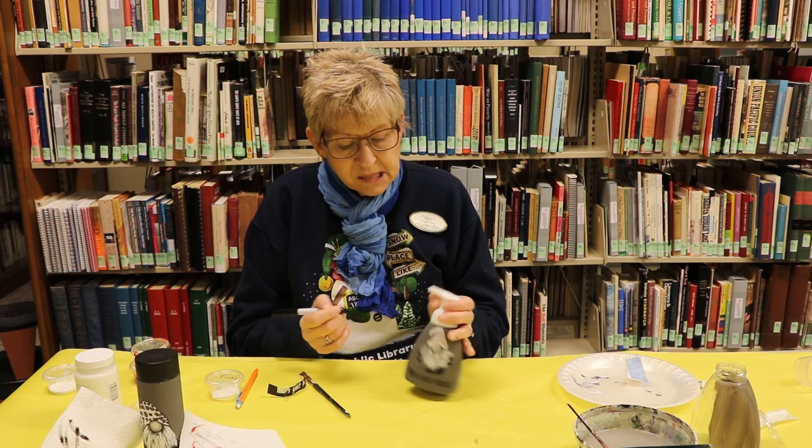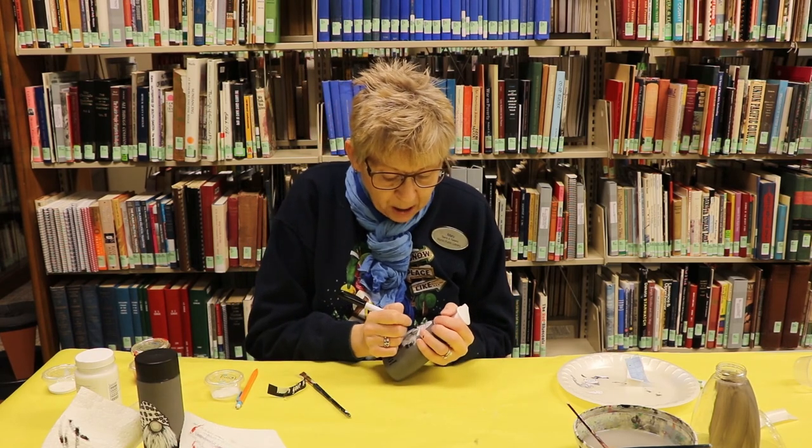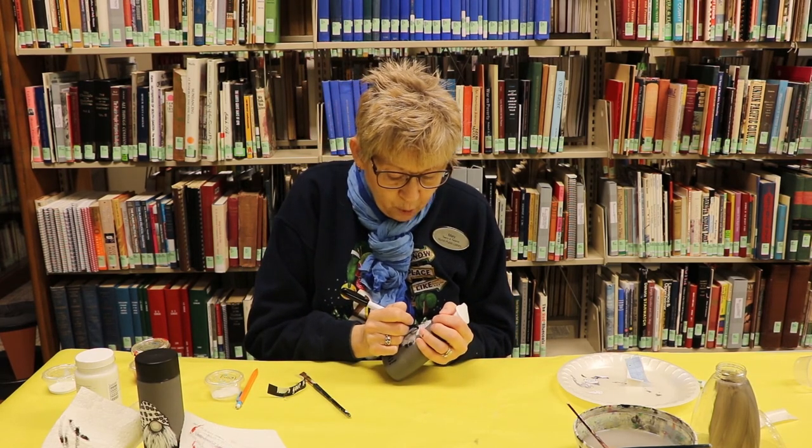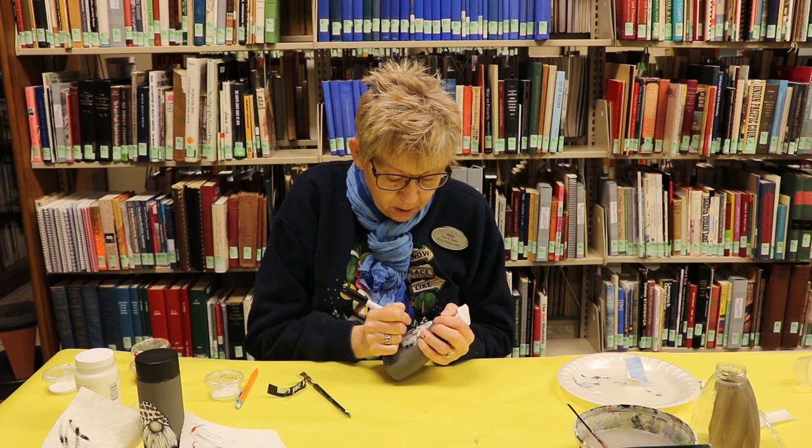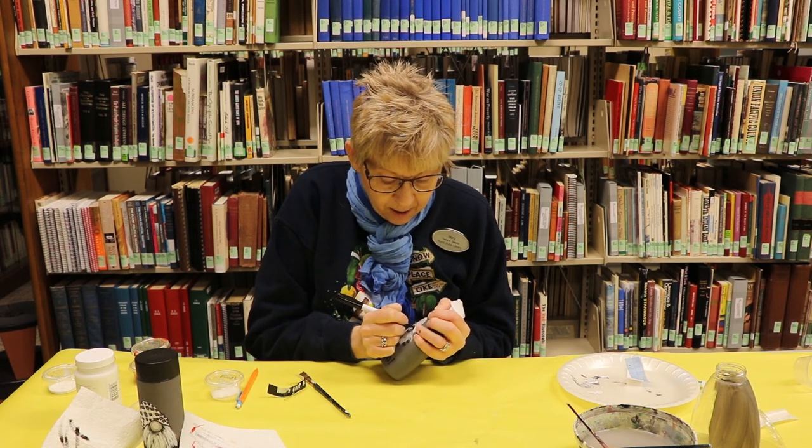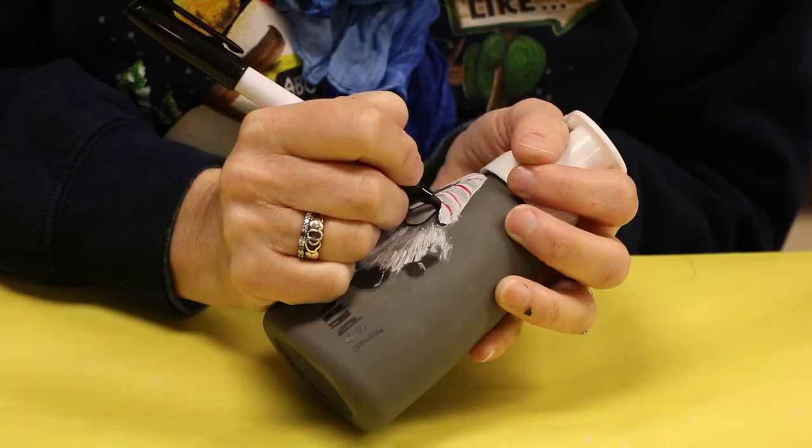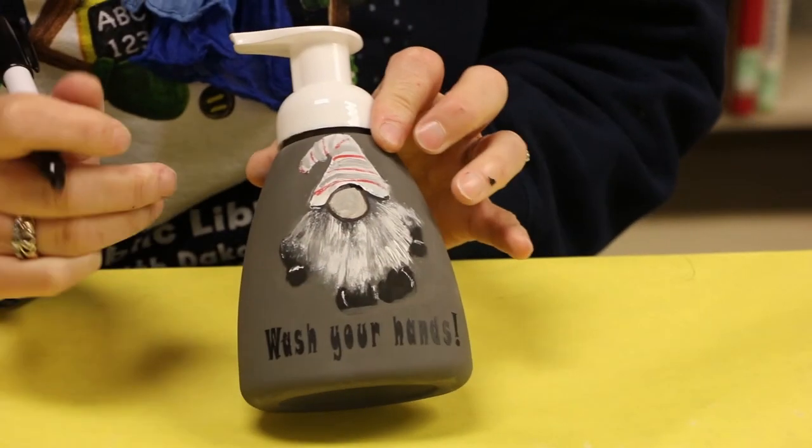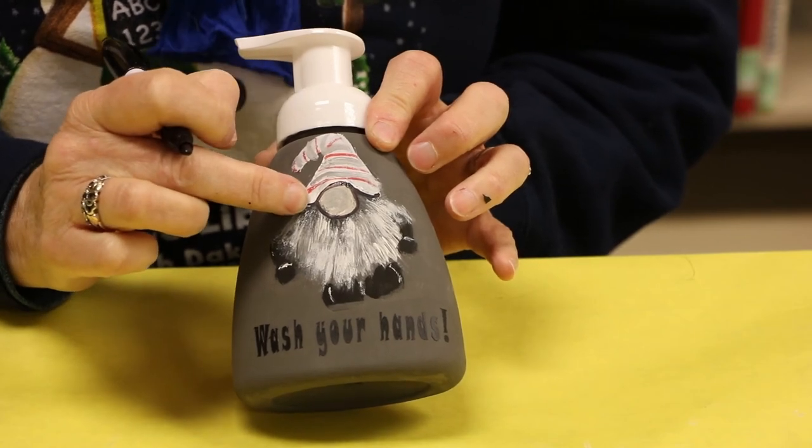To add some highlights, I just want his nose to pop out. So I am going to just take my black marker and circle around it and around the hat here. And now I'm just smoothing it out around his nose so it just makes it pop more.